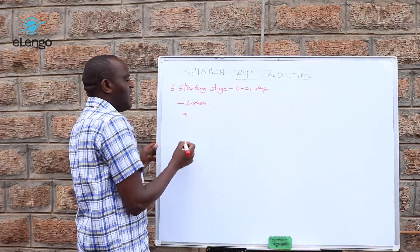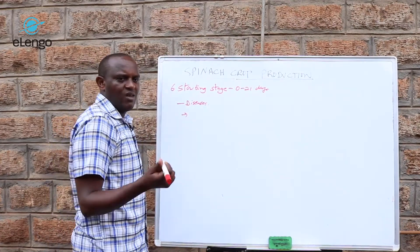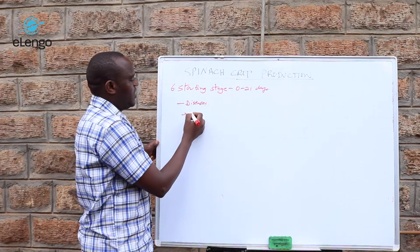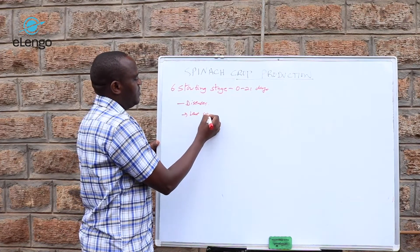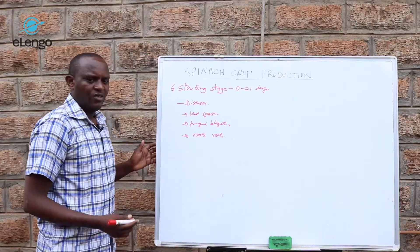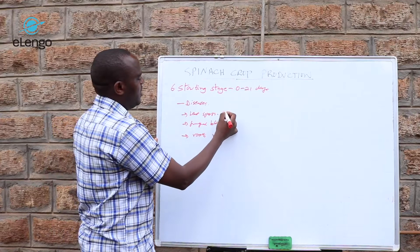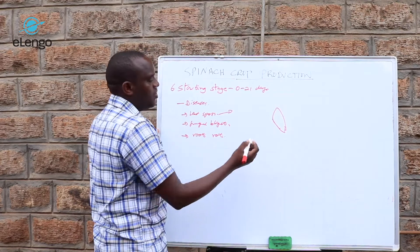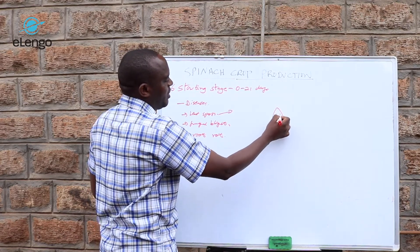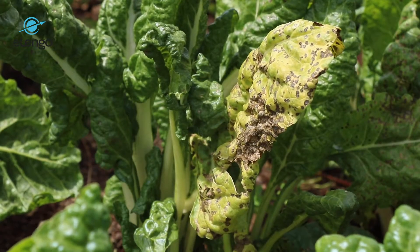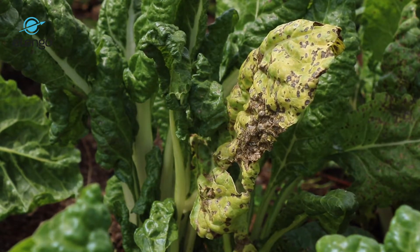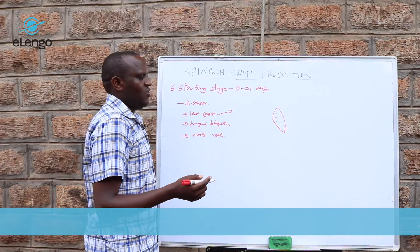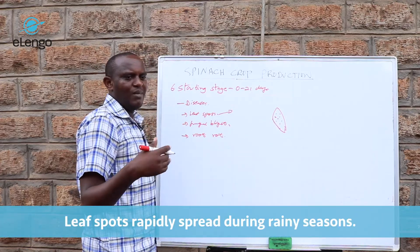The third aspect we look at is diseases. The spinach crop is not attacked by very many diseases. One of the key diseases that usually attacks spinach is the leaf spot, fungal blight, and also root rot — mainly these three diseases. For the leaf spot, you may find tiny brownish spots on the leaves. These may be many depending on your control and the weather — when it rains, they multiply very quickly.